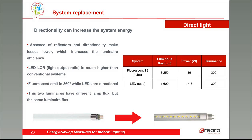And finally, directionality — direct light. Directionality makes LEDs even more efficient. The directionality and also the absence of reflectors increases the luminaire efficiency. The light output ratio is much higher in LEDs than in conventional systems. This table compares a fluorescent lamp and a LED: the fluorescent is more powerful at 36 watts against 14.5 watts, and its flux is higher at 3,250 lumens versus 1,600 lumens. But the directionality means the illuminance is the same in both systems. However, we can't forget the glare problem — directionality can cause glare problems.